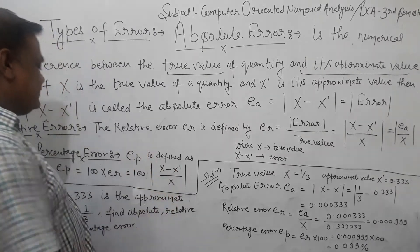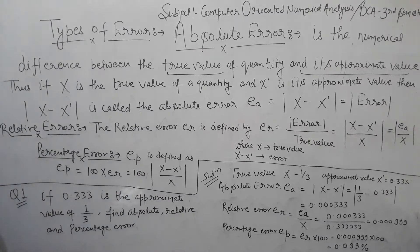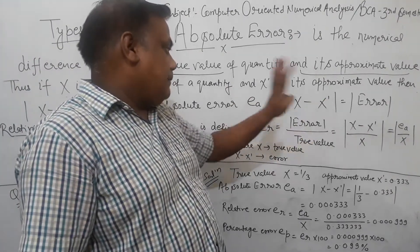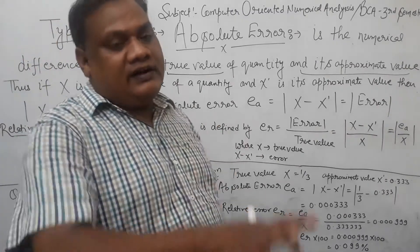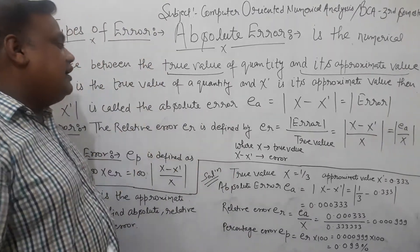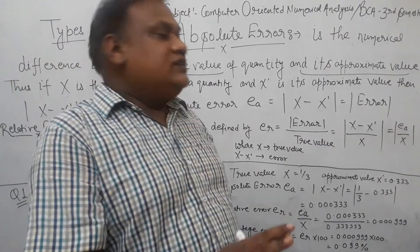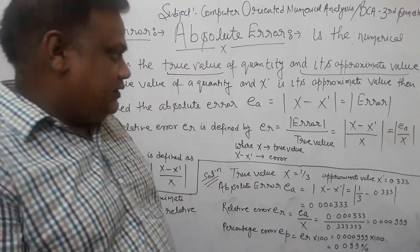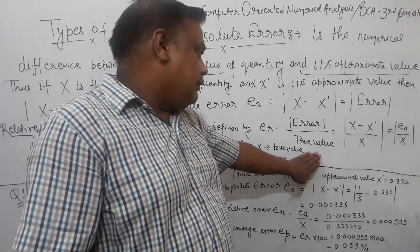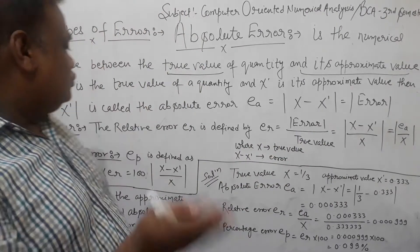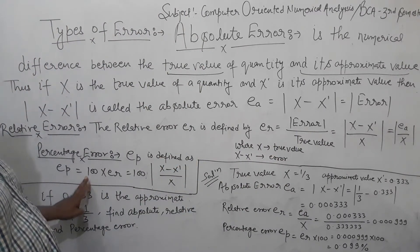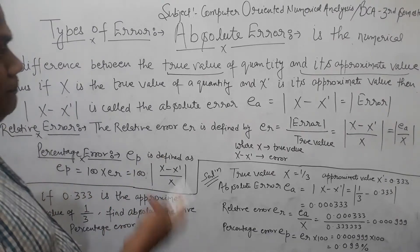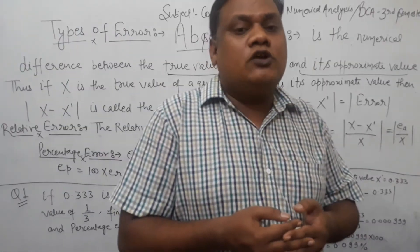The percentage error formula is: (X minus X-dash) upon X, multiplied by 100. So we have to write: Absolute Error equals True Value minus Approximate Value; Relative Error equals Absolute Error divided by True Value; and Percentage Error equals Relative Error multiplied by 100. These are very easy formulas. This is a question which will come in your third semester exam.